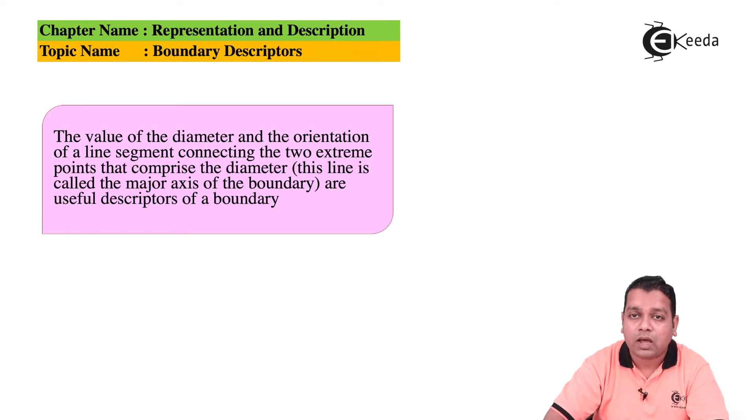The value of the diameter and the orientation of a line segment connecting the two extreme points that comprise the diameter, this line is called the major axis of the boundary, and these particular diameter values are useful descriptors of the boundary.